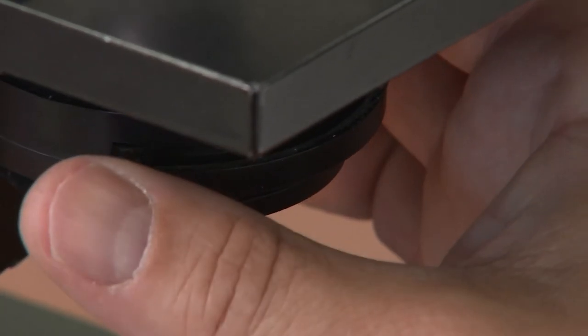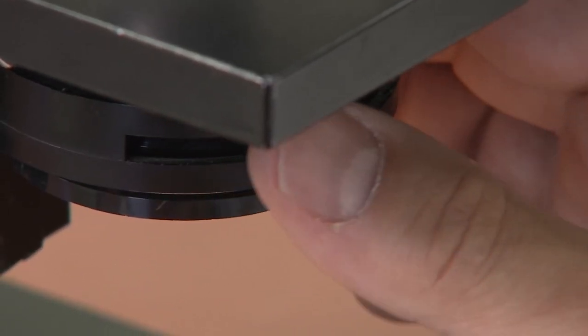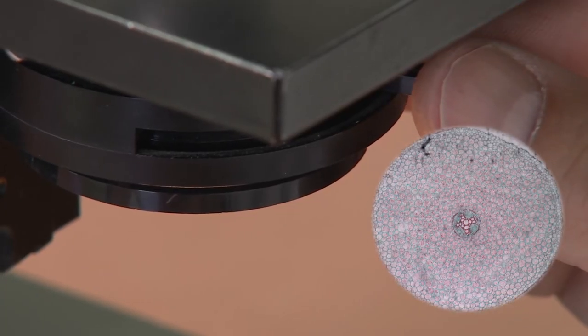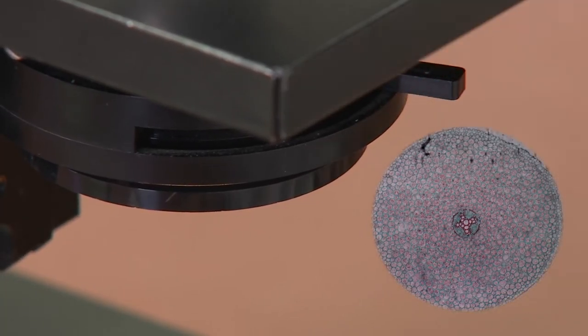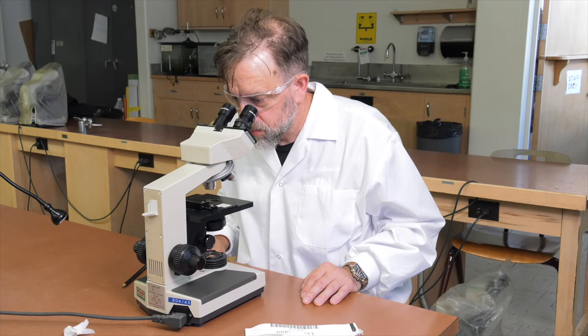Now you will need to adjust the iris diaphragm, which will maximize resolution and increase the depth of field. Use the adjustment lever to slowly close the iris diaphragm until there is a slight loss of light. You will need to adjust the iris diaphragm every time you change objectives.